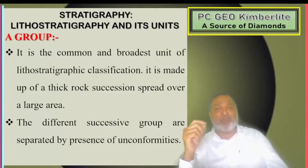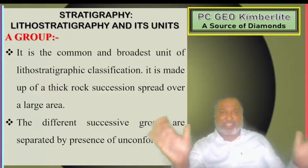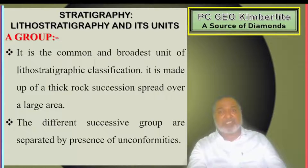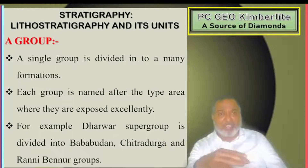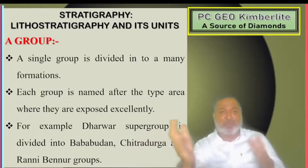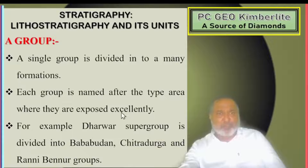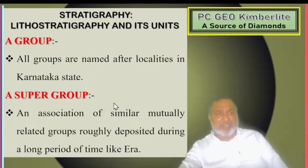Now we will see one by one the actual definitions of each unit. Group: it is the broadest unit of lithostratigraphic classification. It is made of thick rock succession spread over a large area. Different successive groups are separated by the presence of unconformity. A single group is divided into many formations, and each group is named after the type locality where they are excellently exposed. A number of groups come together to form the supergroup — that is what we have in the Dharwar supergroup, which is divided into Baba Budhan and Kithradur or Rani Benur groups.